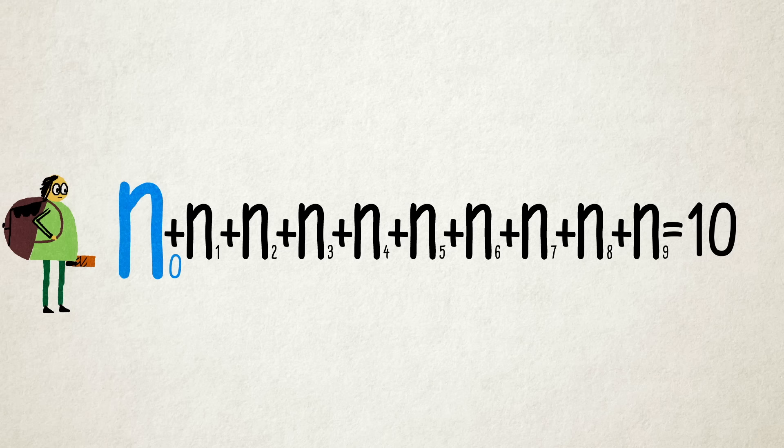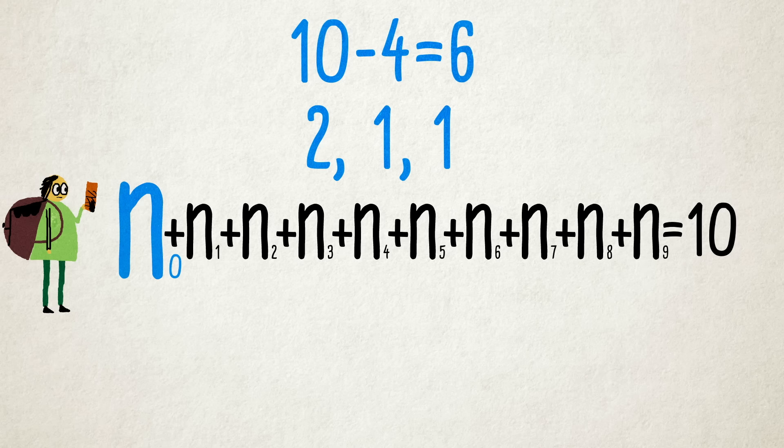Since we know that the 2 and the double ones have a sum of 4, we can subtract that from 10 to get 6. Now it's just a matter of putting them all in place.